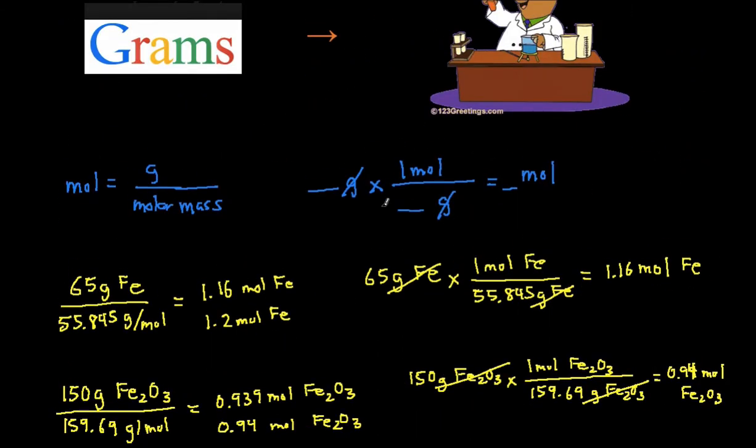And that's it. Just a quick recap. The shortcut, you just take your grams, divide it by molar mass, and that will give you moles. And then with the dimension analysis, you start with the given, which is your grams of the compound or element. You're going to multiply by one mole of the compound or element on top, divided by the molar mass on the bottom, and that will give you your answer.